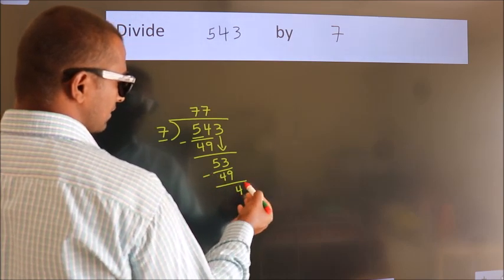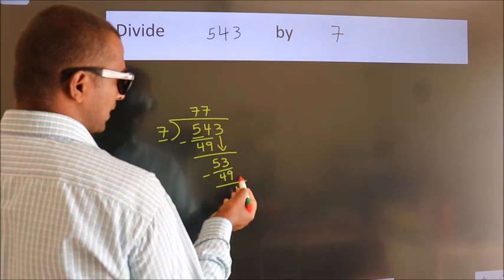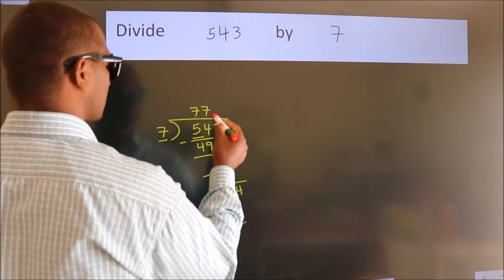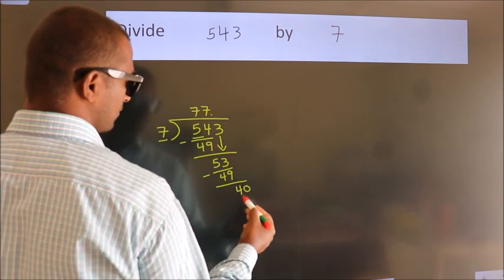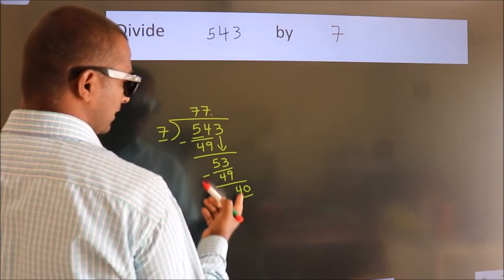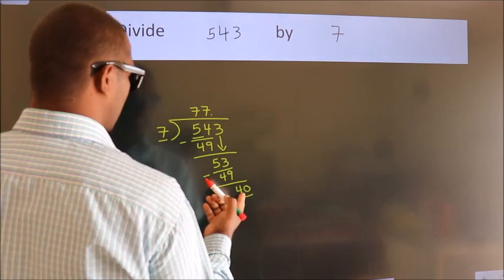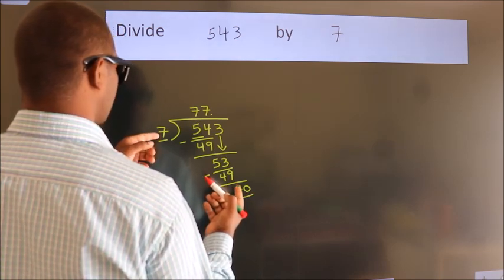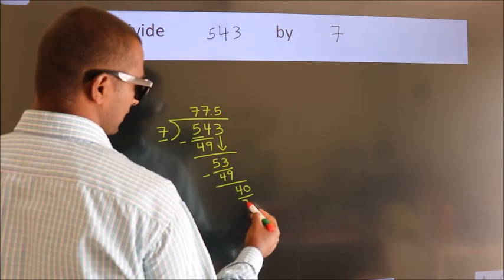After this, there are no more numbers to bring down. So we put a decimal point and take 0, giving us 40. A number close to 40 in the 7 table is 7 fives, which is 35.